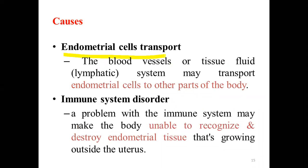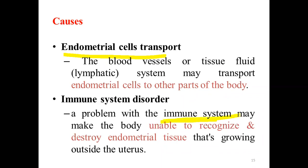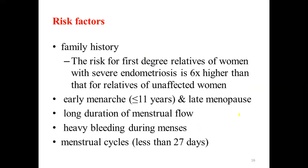There is also endometrial cell transport: through the blood vessels or the lymphatic system, endometrial cells can be transported to other parts of the body, causing adhesion and growth. Regarding immune system disorder — the immune system is supposed to identify and recognize abnormal tissues outside the uterus and clear them, but if there is dysregulation, there is a high probability of having this problem.